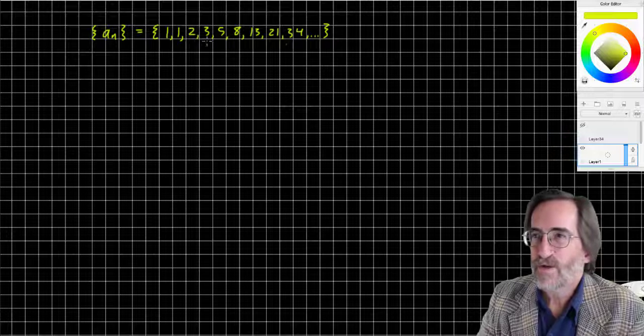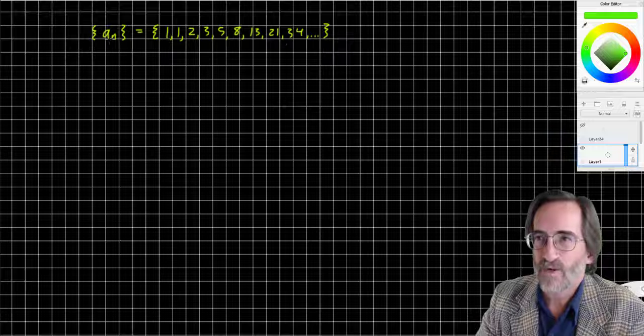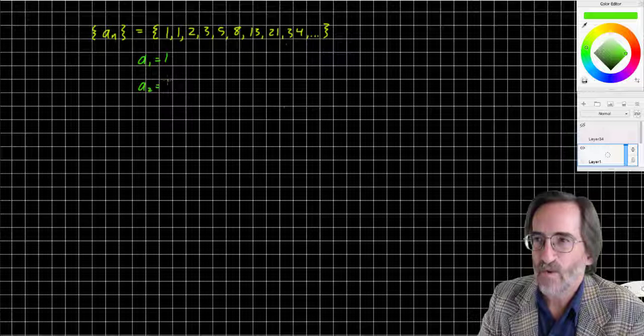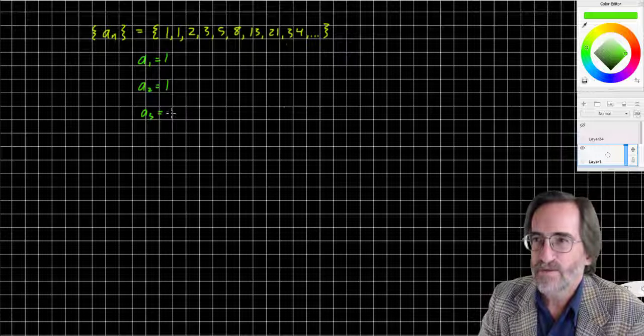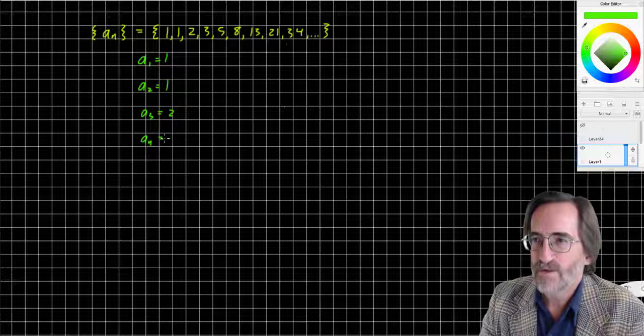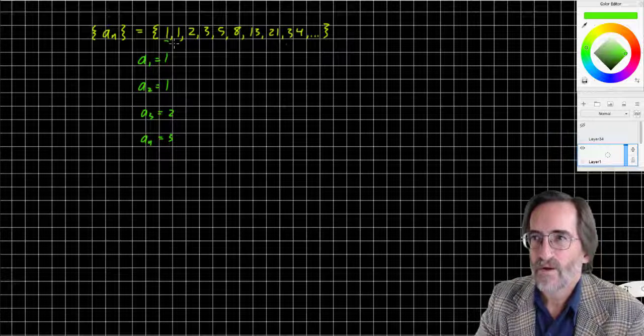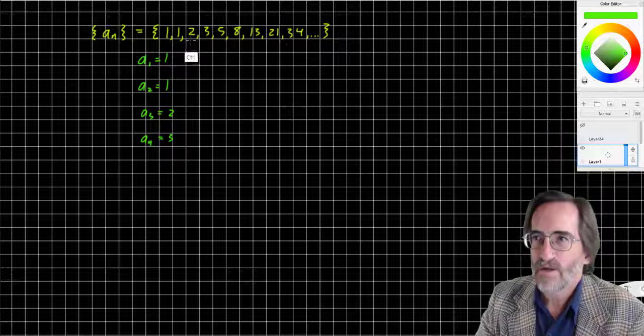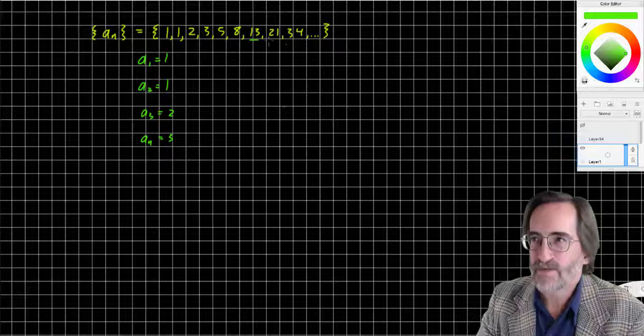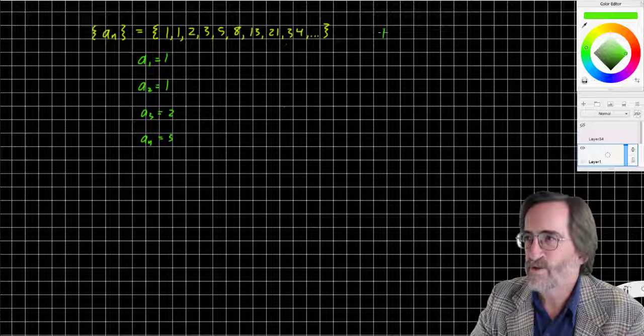Just to explain a little bit here, I would say A sub 1 is 1, A sub 2 is 1, A sub 3 is 2, A sub 4 is 3, and so on. So each one of these refers to the first, A sub 1, A sub 2, A sub 3, A sub 4, A sub 5, A sub 6, A sub 7, A sub 8, A sub 9. And this is a very famous sequence called the Fibonacci Sequence.